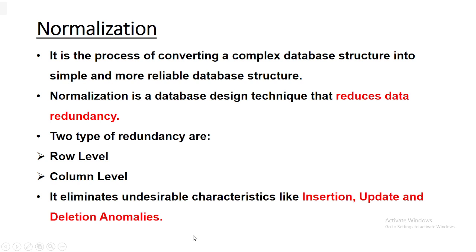Normalization eliminates undesirable characteristics like insertion, update, and deletion anomalies. So what is data redundancy and why should we reduce it? Data redundancy is nothing but the repetition of similar data at multiple places, and we want to minimize it — not just because repetition of similar data multiple times consumes storage space.